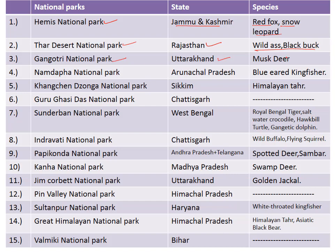Fourth is Namdapha National Park in the state of Arunachal Pradesh, famous for the blue-eared kingfisher. Fifth is Kangchenjunga National Park in the state of Sikkim, famous for the Himalayan tahr. Next is Guru Ghasidas National Park, situated in the state of Chhattisgarh.